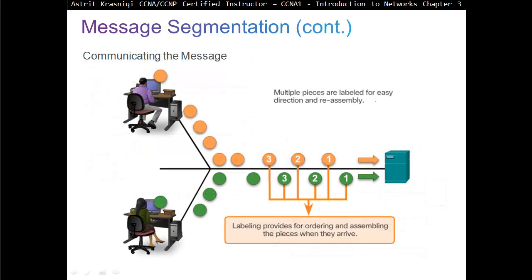Multiple pieces are labeled for easy direction and reassembly. So each segment is going to get a header like port number and destination number as well as a sequence number. At the destination takes all the sequences and puts them together, reassembles them before it gives it to the application layer, or if you think of OSI layer before it gives it to session and presentation and then application.